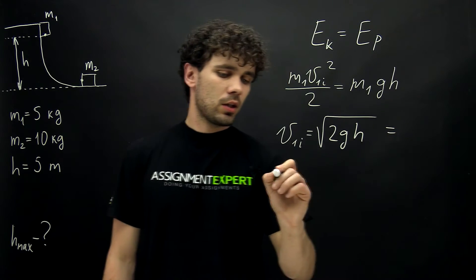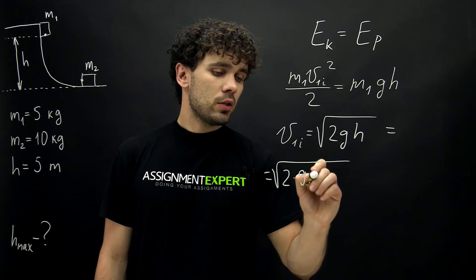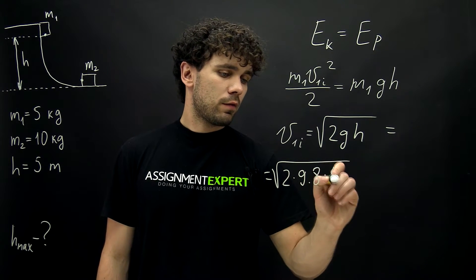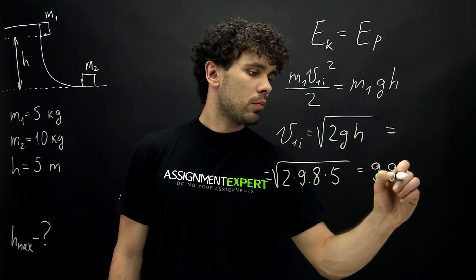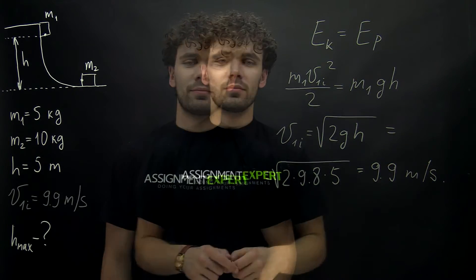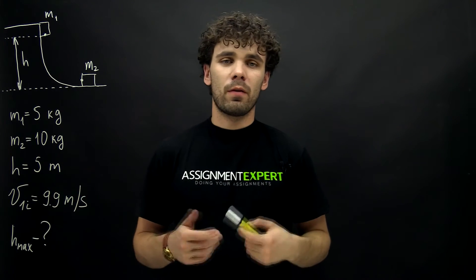And this is equal to the square root of 2 times 9.8 times 5 and gives us 9.9 meters per second. Alright guys. So here we found the initial speed of the first block.